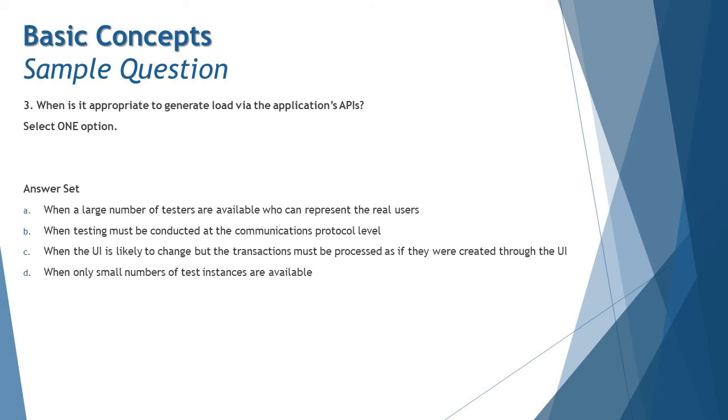are available who can represent the real users. When we have the real users with us, we don't really have to have APIs to apply load because this goes to crowd testing and these testers should be using the real UI. We don't really need to depend on APIs to apply the load or generate the load. Crowd testing is being applied in option A. In that case, the real users are using real UI, not the APIs. Option B: when testing must be conducted at the communication protocol level. B is also not correct because communication protocol level is one level below the API level, and that does not really need to have APIs